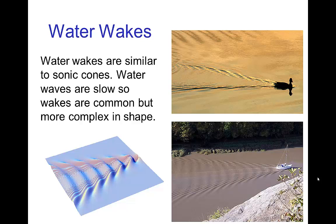Much less dramatically, an object traveling faster than the speed of water waves produces the same effect. Water waves are rather slow, so you don't have to travel very fast to exceed them. You see the same type of cone forming in the wake, though slightly more complicated due to the interaction between the object and the waves. Nevertheless, it is still a characteristic cone, and the angle of that cone is determined by the speed of the moving object — the slower it is, the larger the angle.